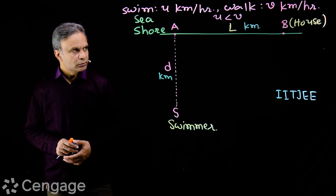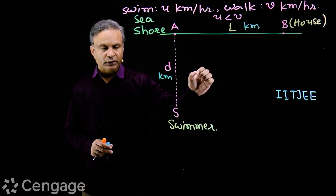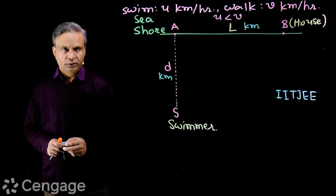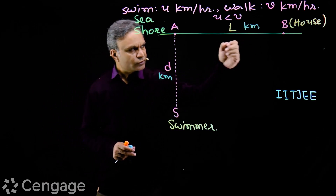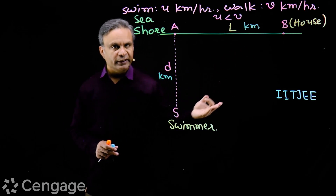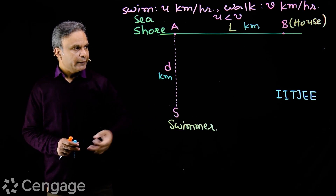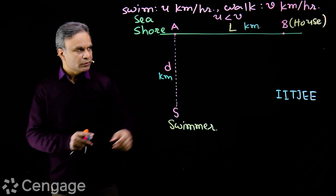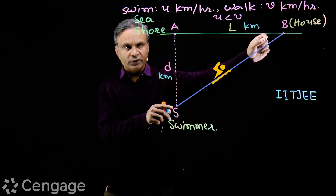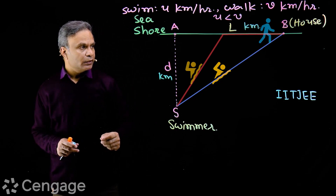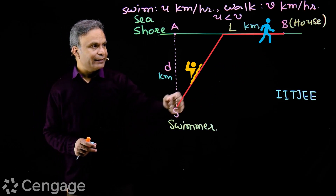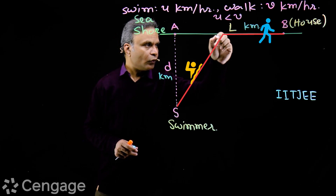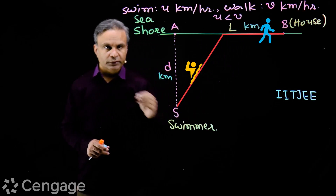The swimmer wants to reach his house in the shortest possible time. He can swim all the way to point B, or he can swim and land at some intermediate point between A and B, and then walk from that point to his house.